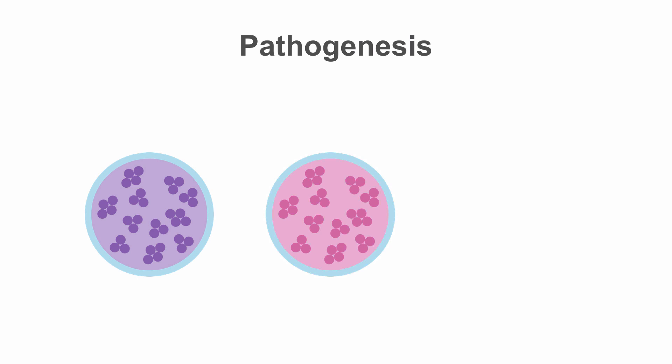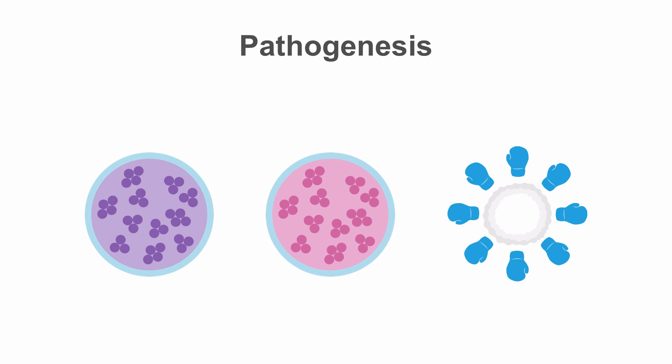The presence of gram-positive or gram-negative organisms stimulates an immune system cascade, which leads to the production of both pro- and anti-inflammatory cytokines. When an over-response occurs in this process, sepsis develops.